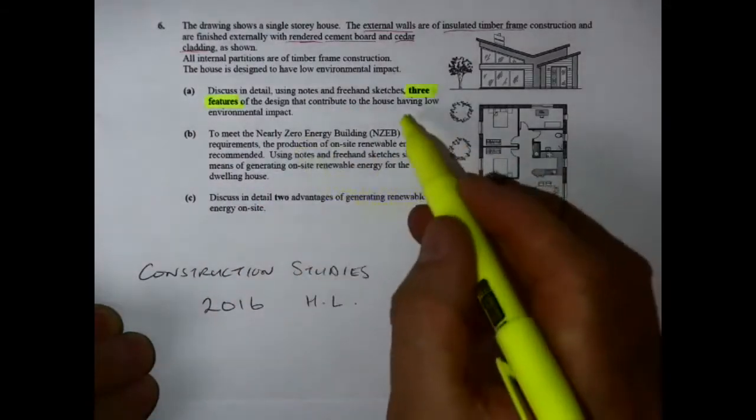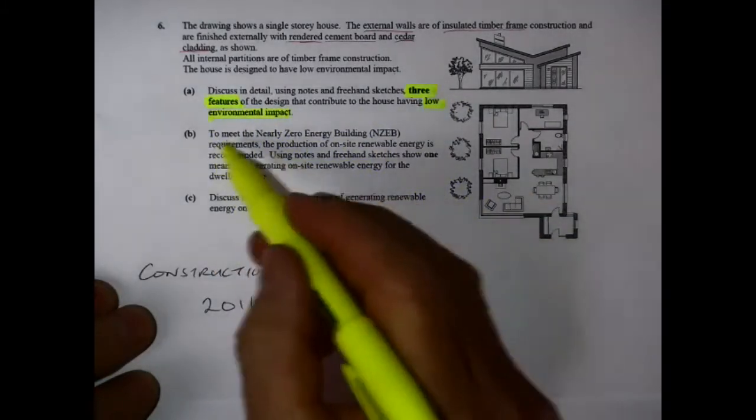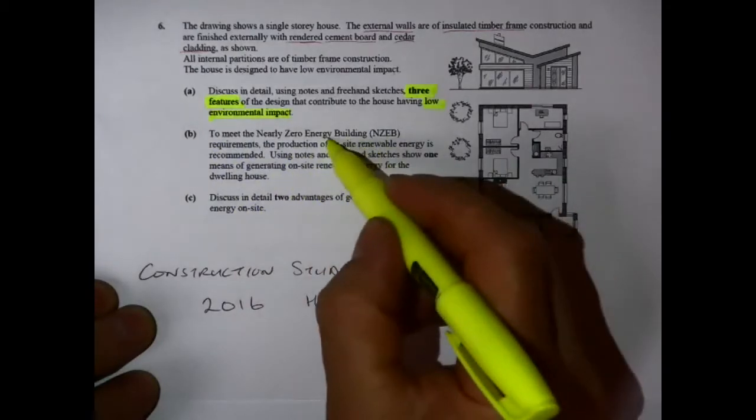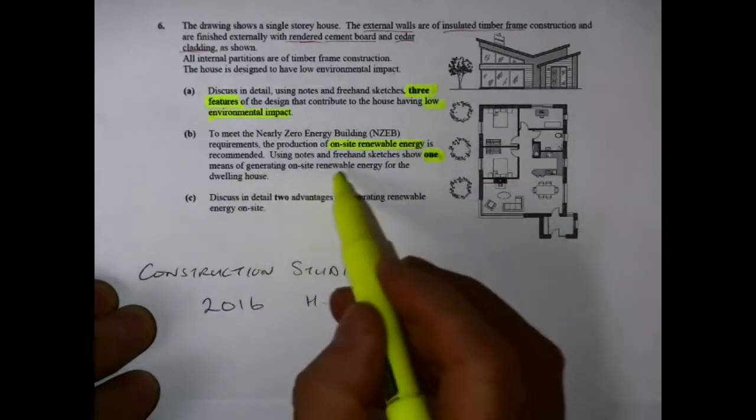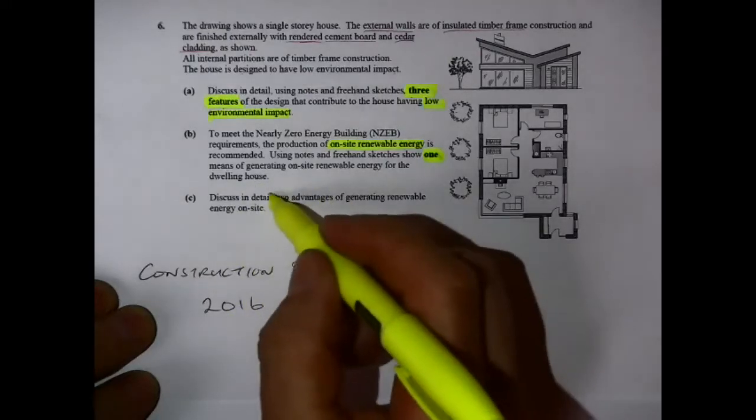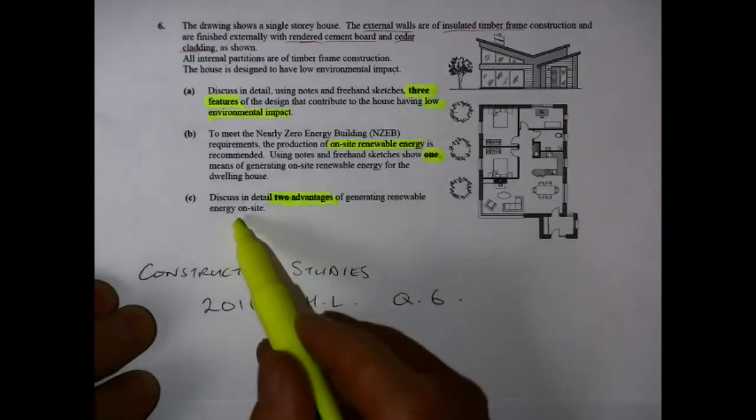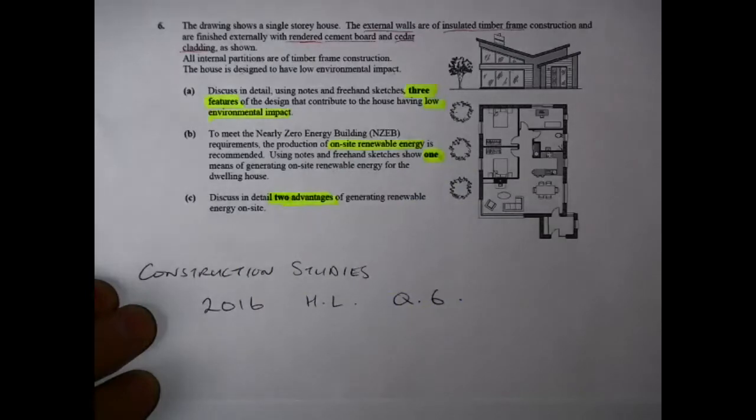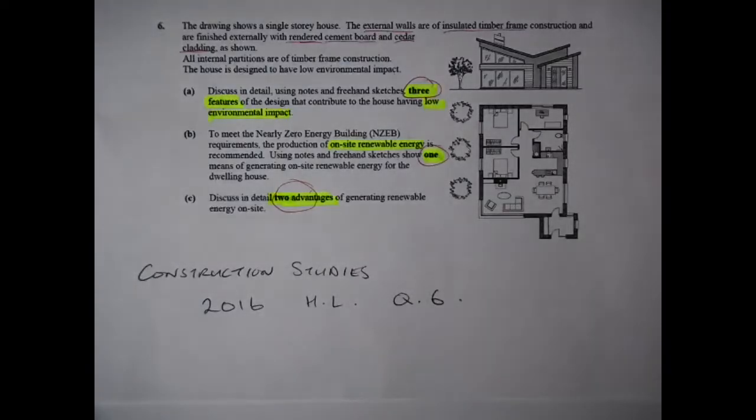All internal partitions are timber frame and the house is designed to have a low environmental impact. I'm highlighting the fact that there's three features being looked for here. It's asking to use detail using notes and freehand sketches, showing three features that contribute to having a low environmental impact. Part B of the question focuses on meeting the near zero energy building requirements and the production of on-site energy. It says to use notes and freehand sketches to show one means of generating on-site energy, and then to discuss two advantages of generating renewable energy on-site.